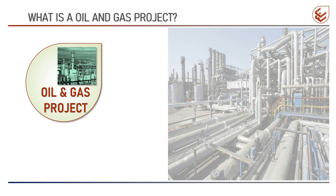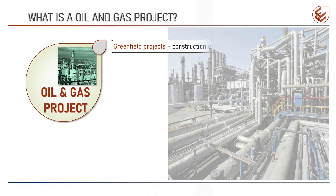Now let's see what is an oil and gas project. Oil and gas projects are categorized in many ways. Based on the project stage, the project may be upstream, mid-stream, or downstream. When located on land, the projects are called onshore projects, and when in the sea, they are called offshore projects. All these projects are broadly classified into two categories based on construction: greenfield projects and brownfield projects.